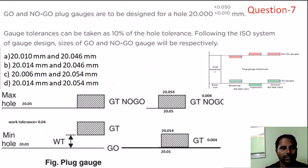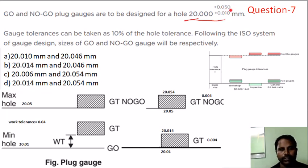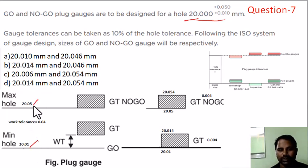Next, question number 7: the hole is 20 with tolerance values 0.01 and 0.05. The lower limit is 20.01 and the upper limit is 20.05. The work tolerance is therefore 0.04.